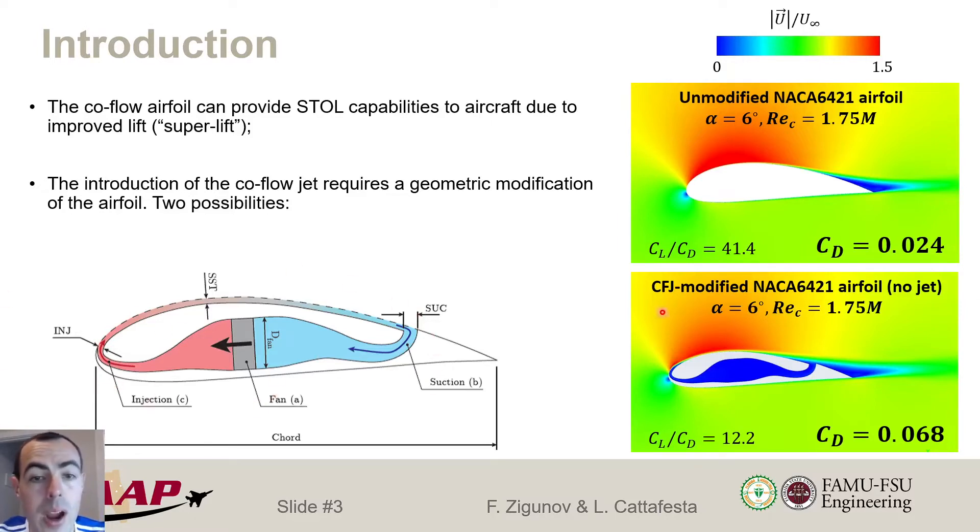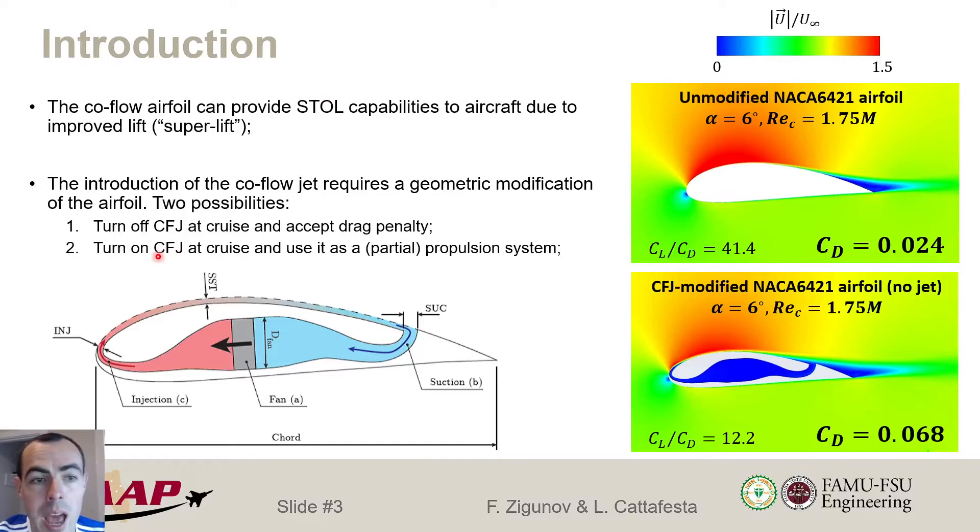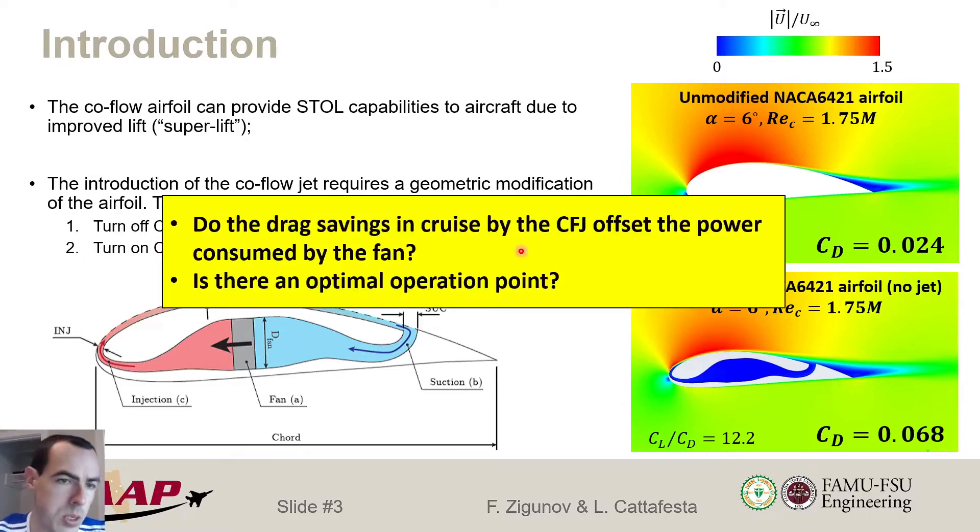This jet concept requires us to modify the external geometry of the airfoil. As we can see here, that causes an increase in drag coefficient of quite significant compared to the unmodified airfoil. We have about three times as much drag, which then leaves us with two possibilities. We can have this co-flow jet, which is technically not required in a cruise condition, and then we have a drag penalty, which is not desirable. Or we can have this co-flow jet system on during cruise, and then it serves as a partial propulsion system. So we have a jet coming out of this, and this reduces the drag, which effectively works as a thrust generating device.